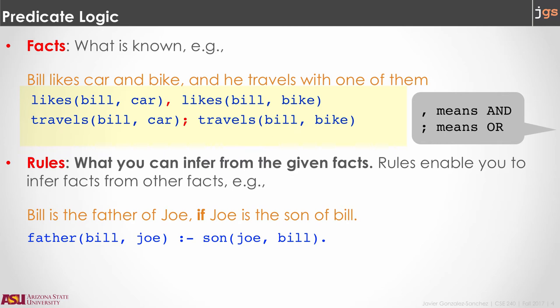We have facts representing knowledge, equivalent to sentences in natural language, in which we put the predicate first and the objects inside parentheses separated by commas. The comma represents AND and connects different facts. The semicolon represents OR and also connects different facts. We use facts to create rules. The rules help us to infer information from the given facts. You are going to identify the rules by the colon-dash that represents the if statement.